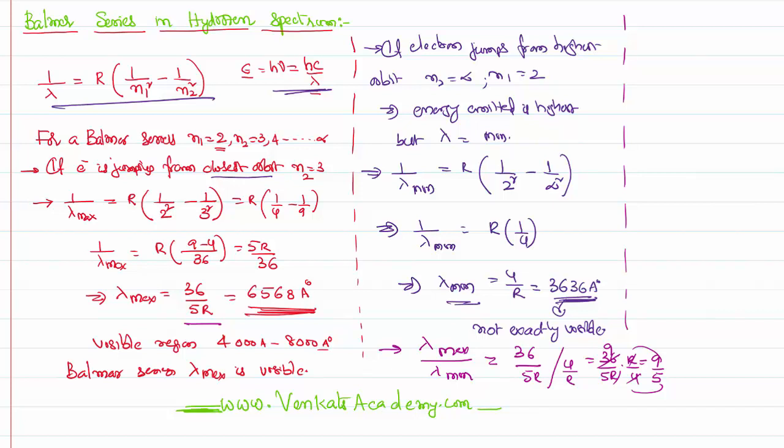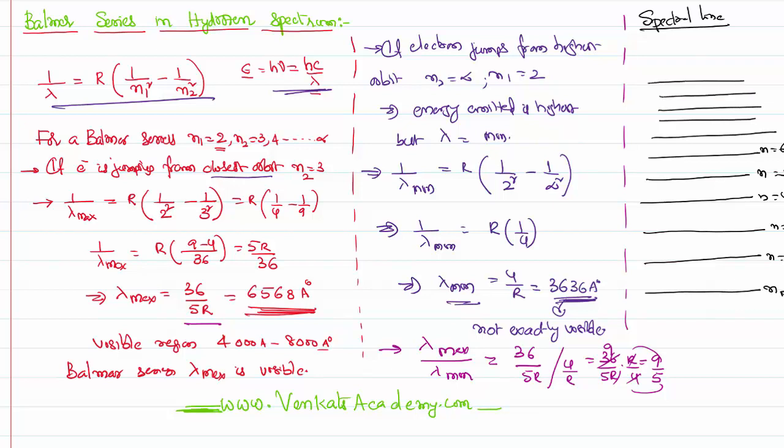Now continuing this discussion, if you want to draw a diagram, spectral line diagram for the Balmer series in a hydrogen spectrum, say this is starting from here somewhere, n equal to 1, n equal to 2, n equal to 3, 4, 5, 6, 7, 8 and so on, assume up to infinity, n equal to infinity.